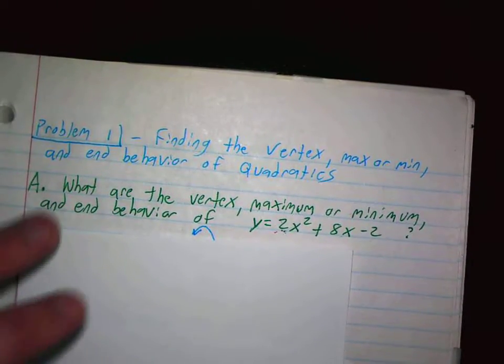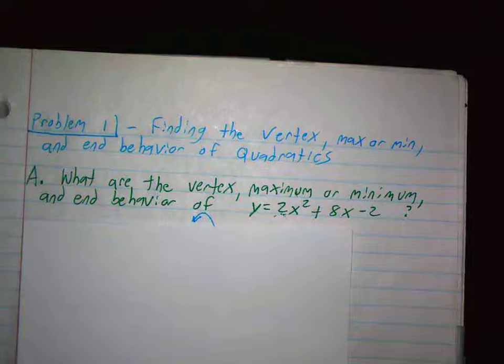Or you can use this formula from algebra 3, negative b over 2a. b is the second coefficient. That'll tell you the x value. You plug it back into that equation and that'll tell you the y value of the vertex.